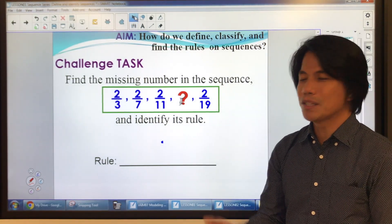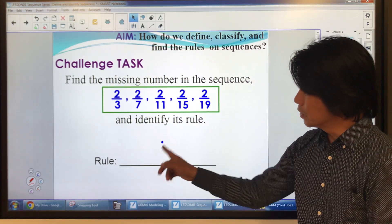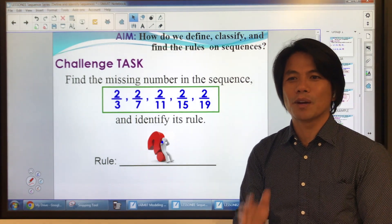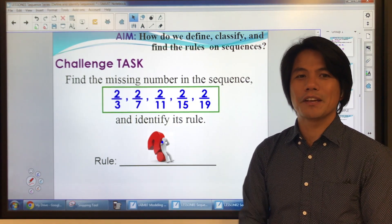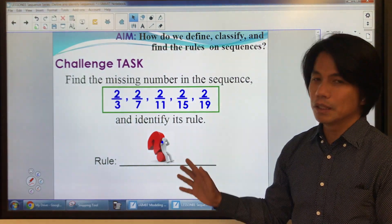Okay, what's the missing number here? It's two over 15. And what's the rule? Ta-da! We don't know yet. What I want you to do is to watch the next video. I'm going to show you the answer to this, or the rule to this sequence.